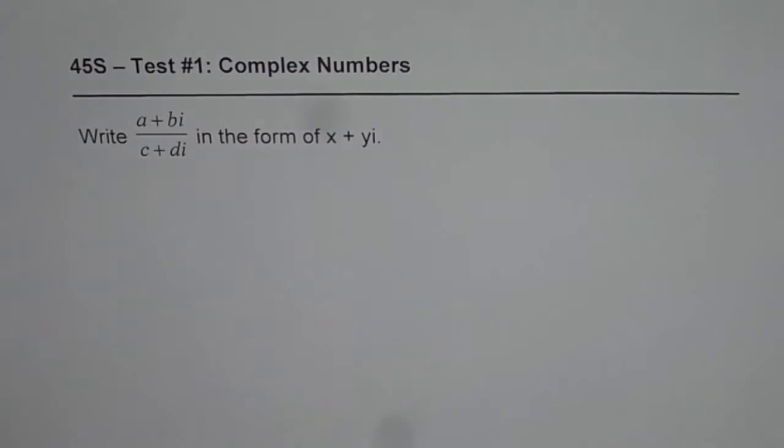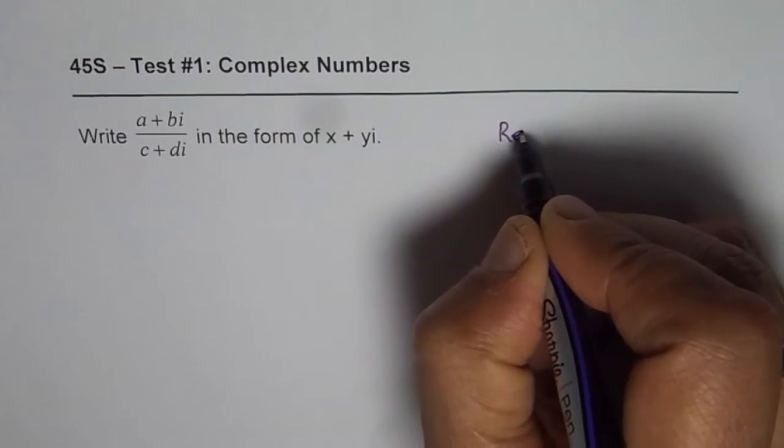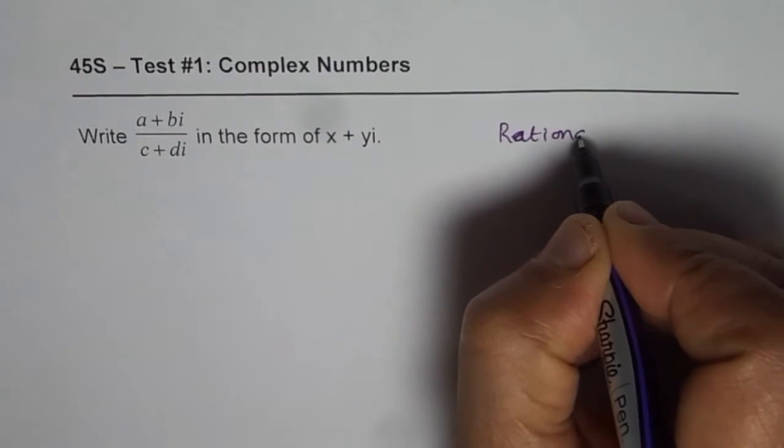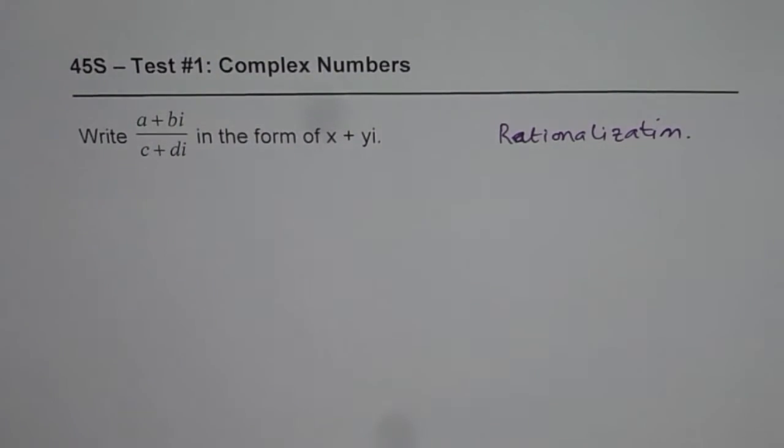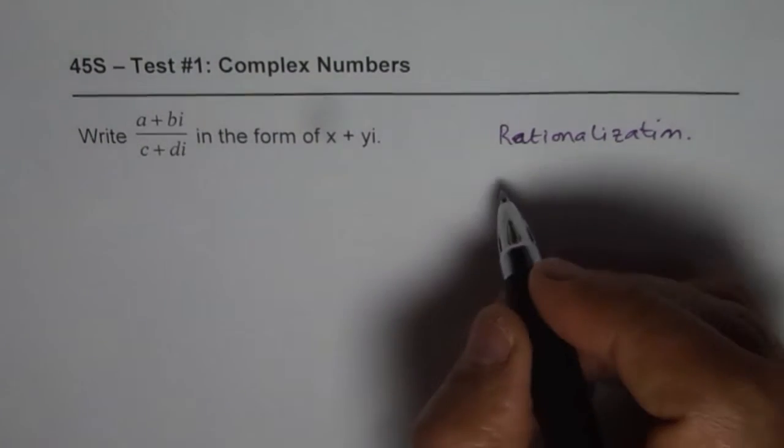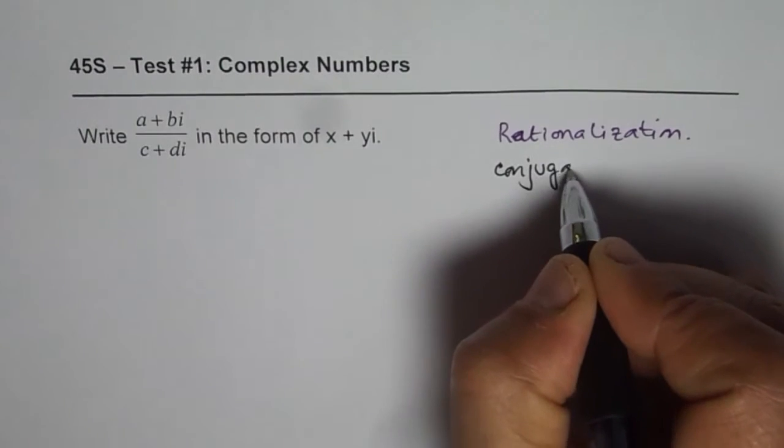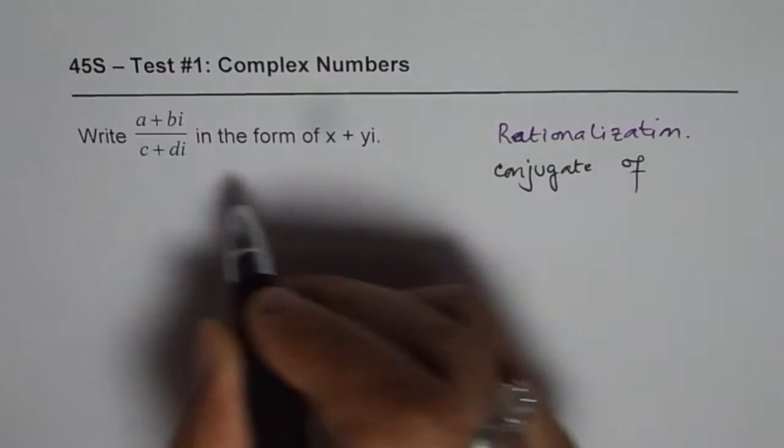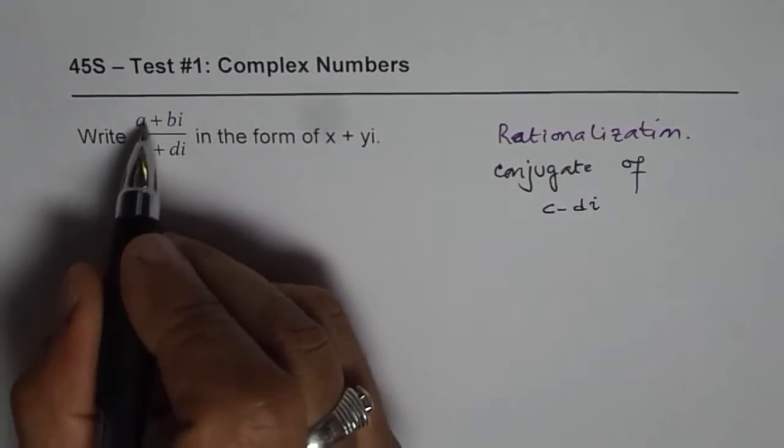We can do it with rationalization. The process is rationalization in which we will multiply and divide by the conjugate of denominator. We are looking for conjugate of denominator which is c minus di. So let us rationalize it.